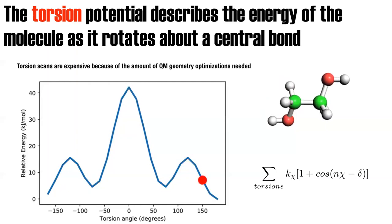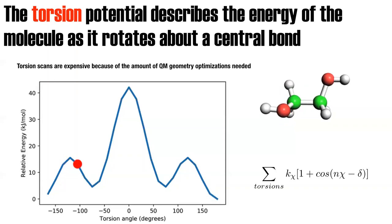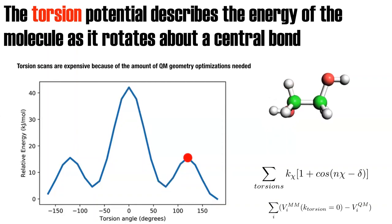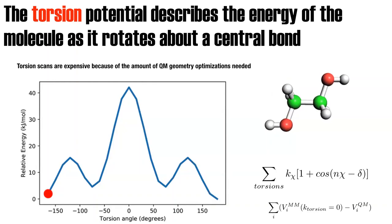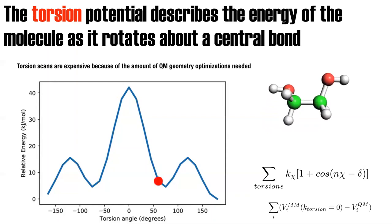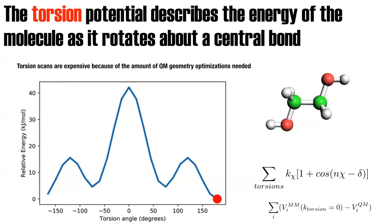It's important to note that the torsion parameters are not fitted directly to the Fourier series — they're actually fitted to the residuals. Some people see this as more of a dumping ground for all the errors of the 1-4 interactions. Anyway, that's what the torsion potential is.